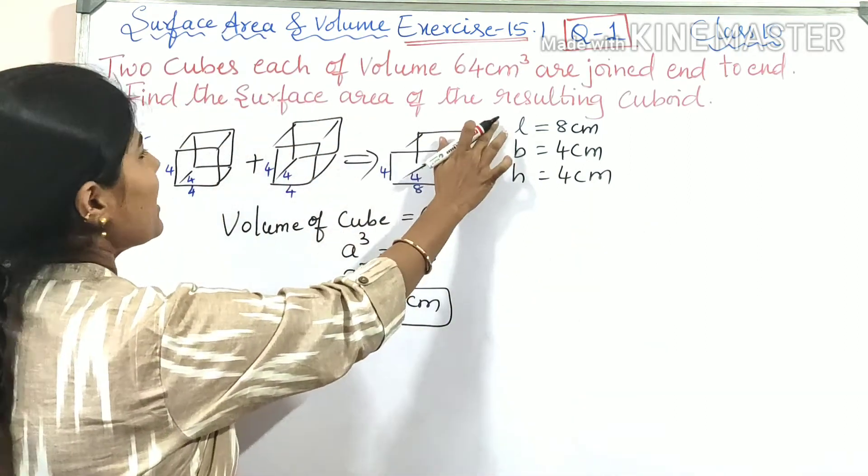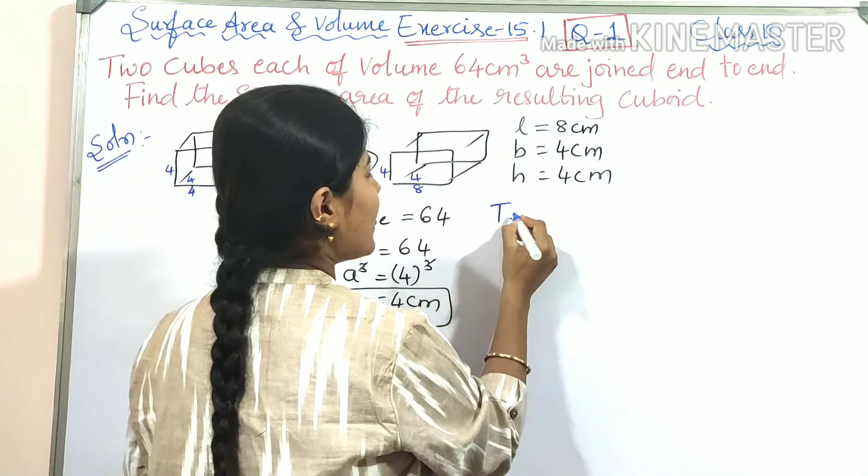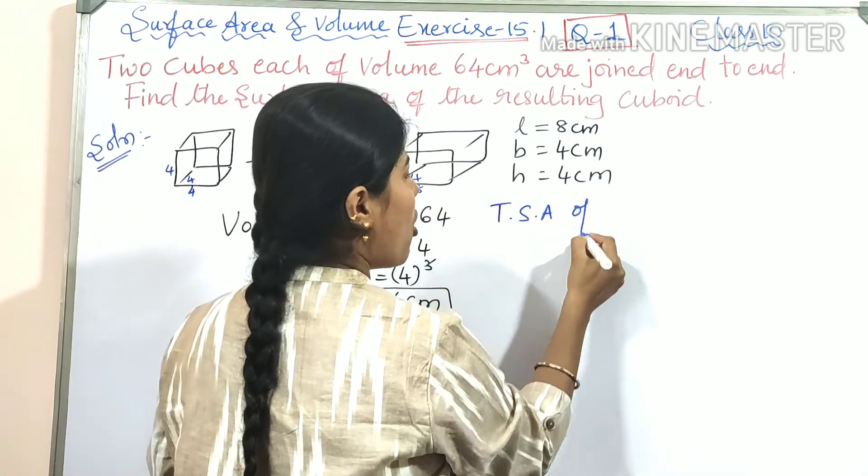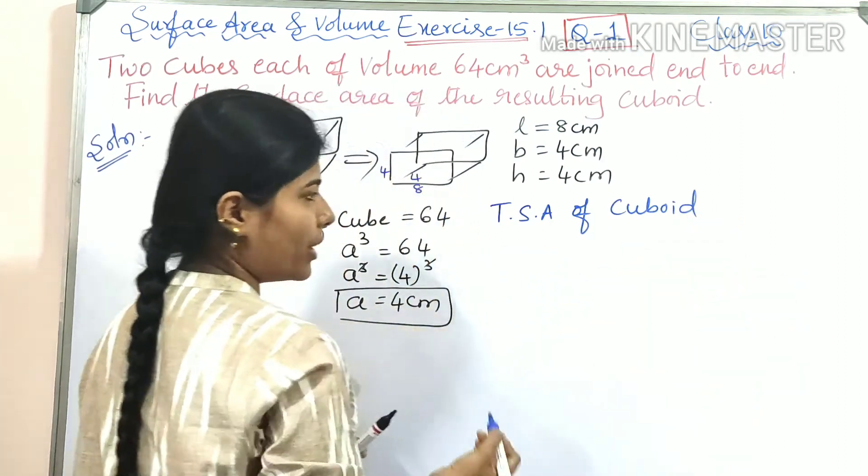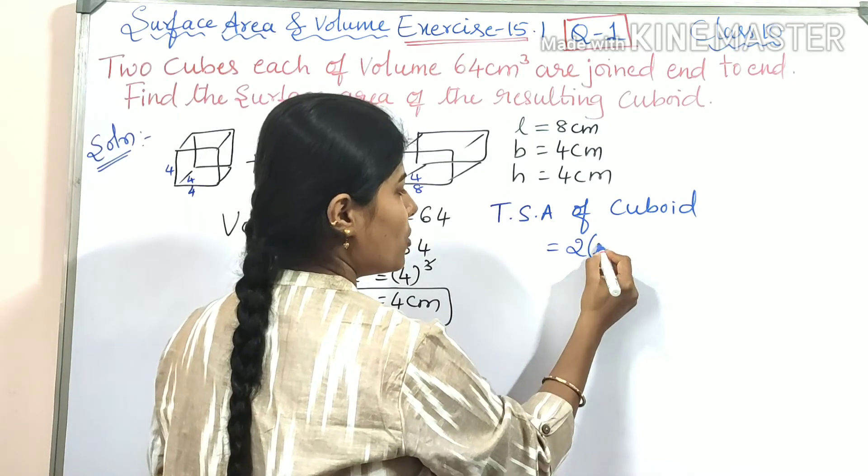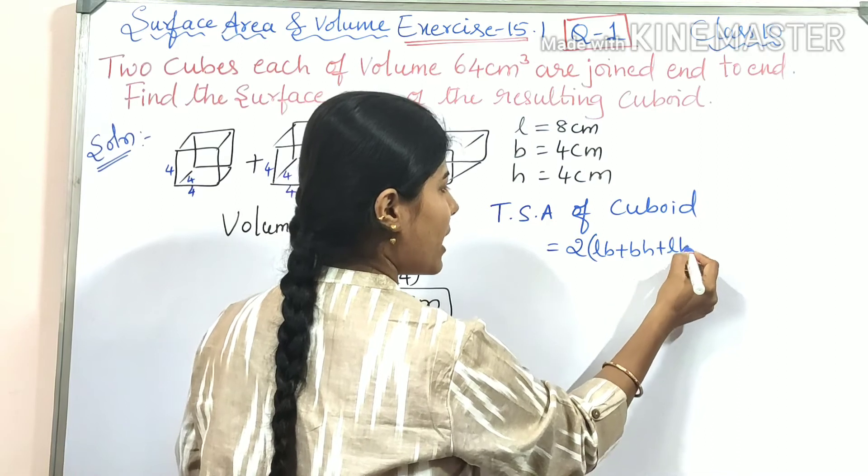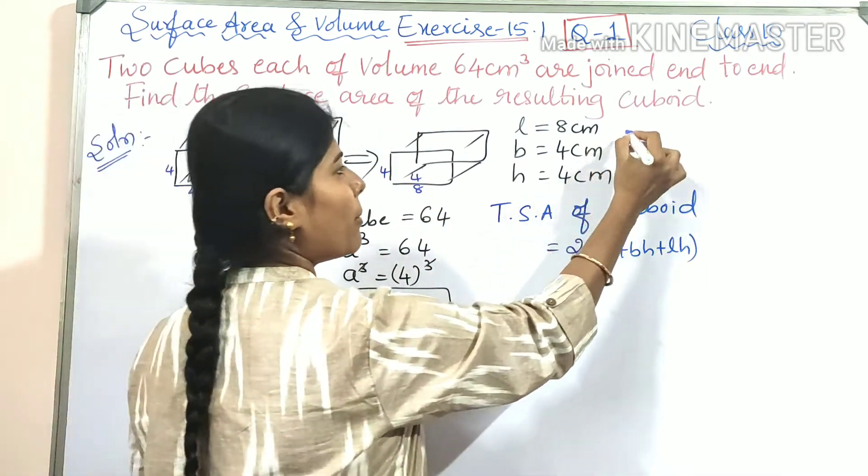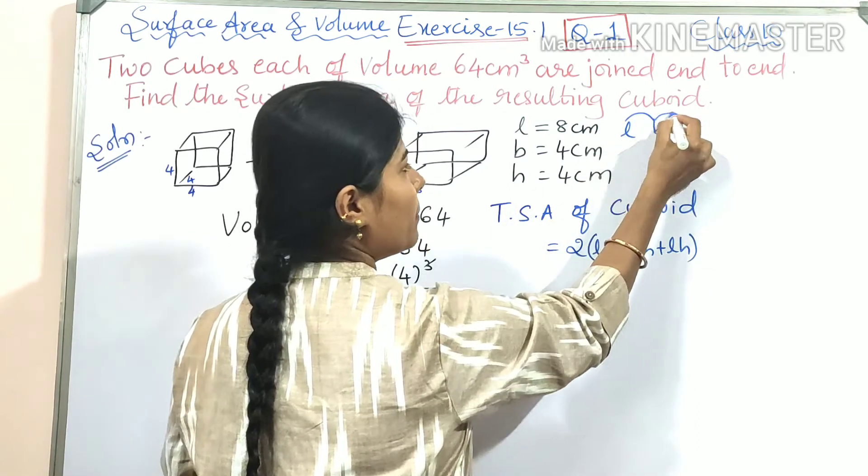That means TSA of cuboid. What is the formula for TSA of cuboid? 2(lb + bh + lh). This can be remembered like this: l×b, b×h, l×h, then multiply by 2 because there are 2 of each face.